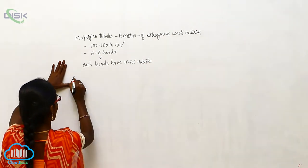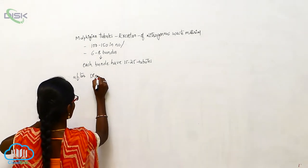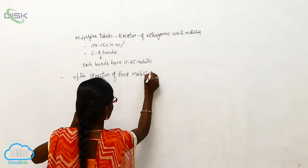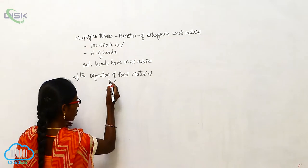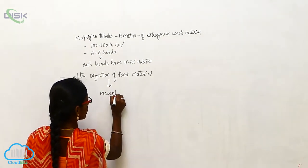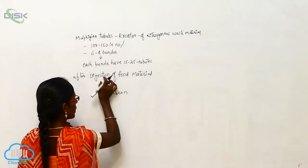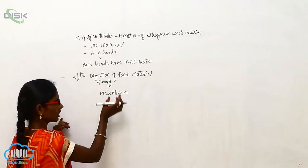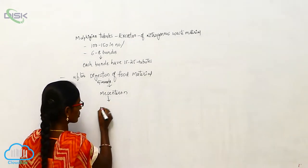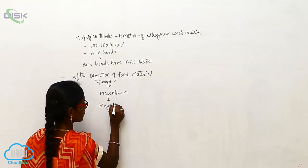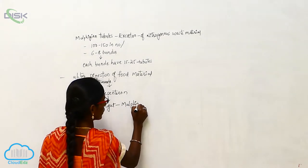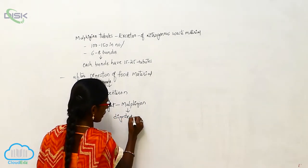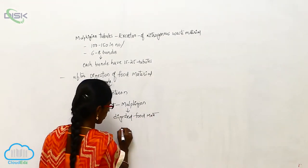After digestion of food material, the food material goes to the mesenteron. Digestion is completed at the gizzard, after which it goes to the mesenteron and then to the hindgut. The Malpighian tubules are present here, and through them the digested food material undergoes absorption.